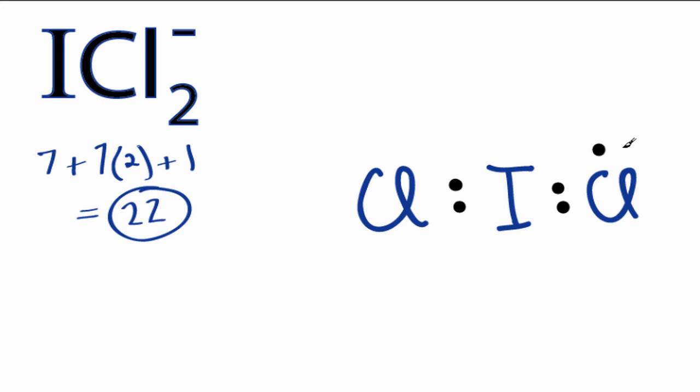That's 2, 4, and then around the outside, 6, 8, 10, 12, 14, 16. We used 16. We have 6 left, so we'll have to put 3 pairs on this iodine here.